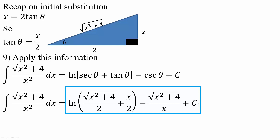Plus tan theta, which we know is x over 2, minus cosecant theta, which is 1 over sine theta. So we flip it to get hypotenuse over opposite: hypotenuse is the square root of x squared plus 4, and opposite is x. That gives us our combined expression plus c1.